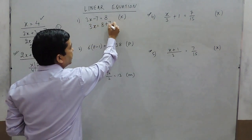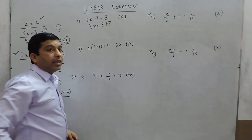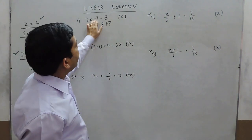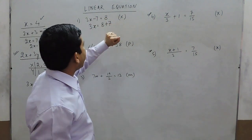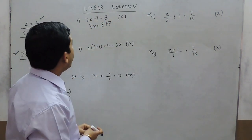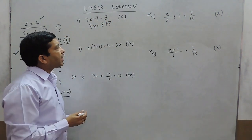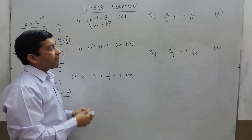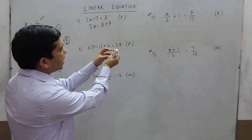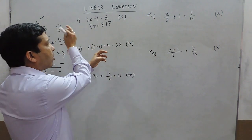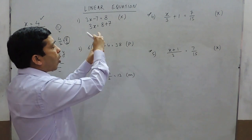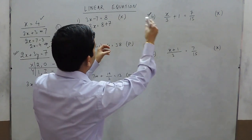The question arises: why is the 7 taken to the right hand side? We must keep in mind that all variables are to be kept on the left hand side and all constant values are to be taken on the right hand side.